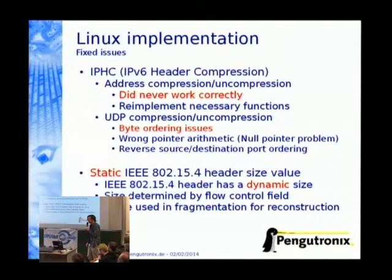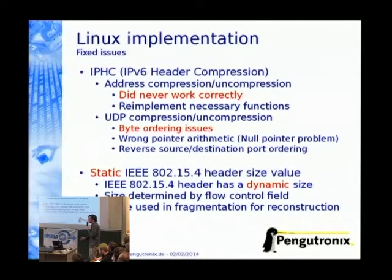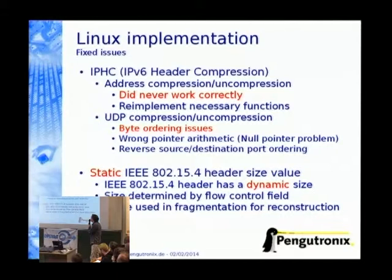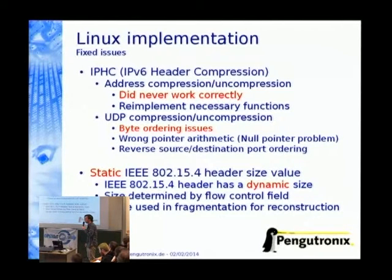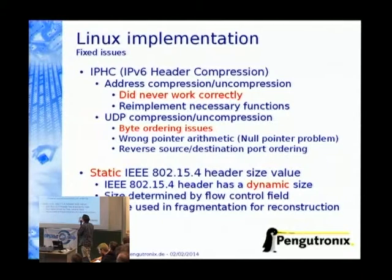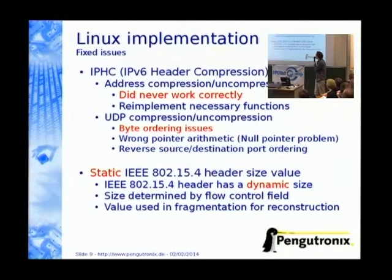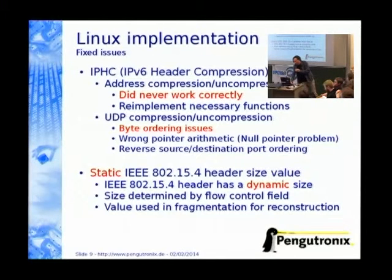So I looked a bit deeper into the code and fixed some things. The IPv6 header compression — short IPHC — never worked correctly, and I re-implemented the necessary functions to work correctly as the RFC specifies. The UDP compression and uncompression had byte ordering issues; somebody had hacked this into the Linux kernel and never tested it — it looks very similar to the ContikiOS stack. But it's already mainline and I fixed it. There was also a problem with the MAC layer header size, which is dynamic, but a magic number was using a static header size value, which was wrong.